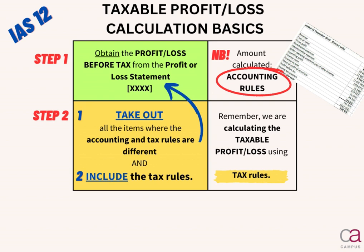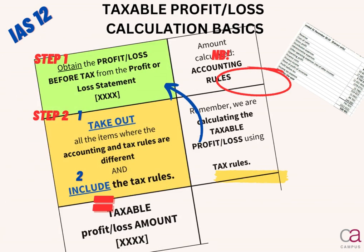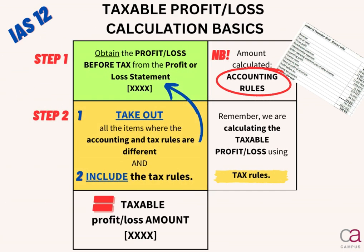Included at the top in your profit or loss before tax amount is your accounting rules. Therefore, we need to take out the items where the rules are different and we need to include our tax rules to be able to calculate your taxable profit or loss, the amount as per your tax rules.